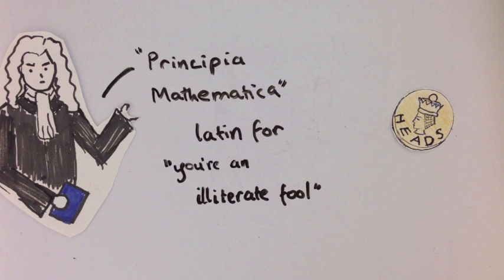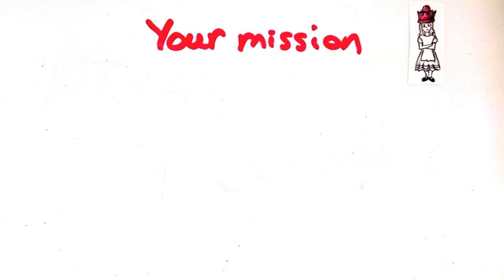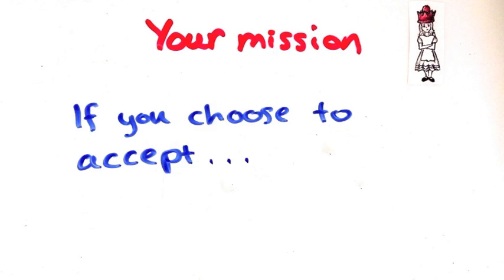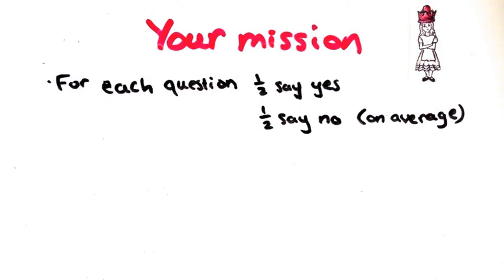So your mission is to ensure that these two things happen. For each question, on average half the spies asked it will answer yes and half no. And team members if they're asked the same question should give the same answer.